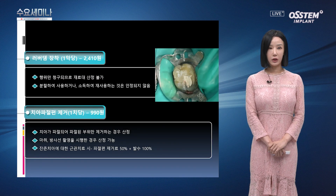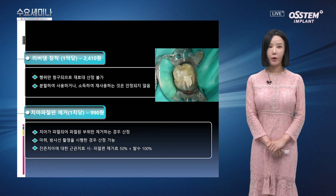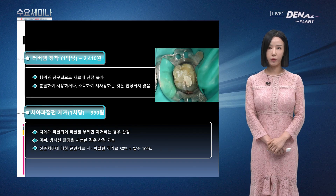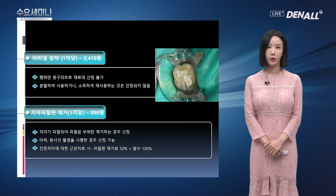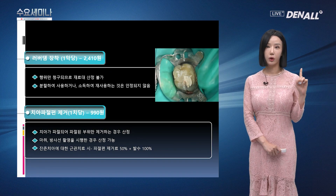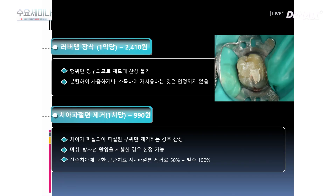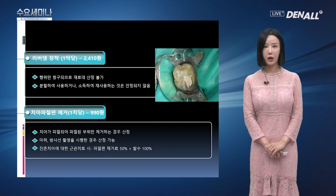러버댐 장착과 치아파절편 제거입니다. 첫 번째로 러버댐 장착입니다. 1학당으로 청구되고 2,410원입니다. 행위만 청구되고 재료대 산정은 불가합니다. 러버댐을 분할하여 사용하거나 소독하여 재사용하는 것은 인정되지 않습니다.